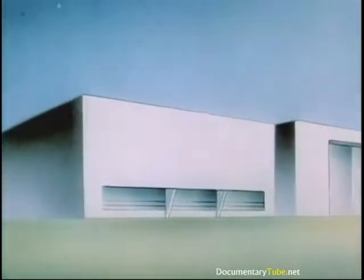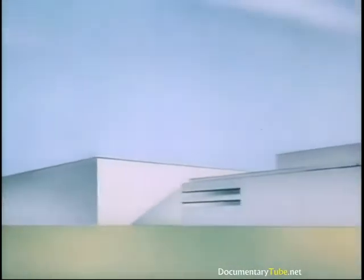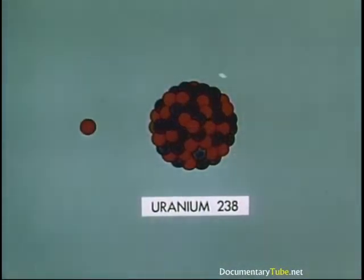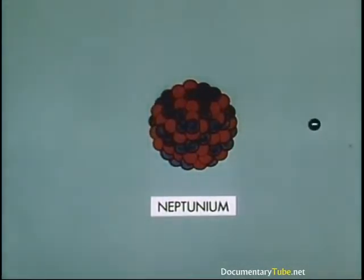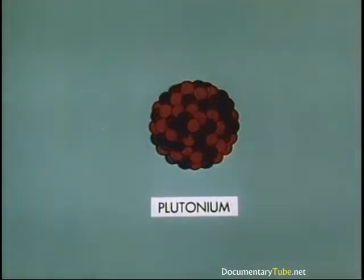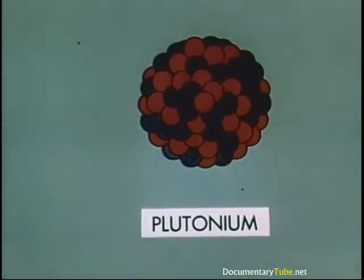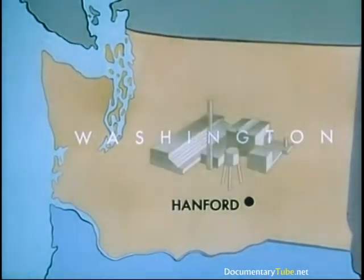The Manhattan Engineer District team of scientists, engineers, industrialists, labor, and military built huge plants to produce the stuff by this and other means. The scientists went further, taking advantage of the fact that uranium-238, instead of fissioning, tends to capture neutrons to ultimately become plutonium — and plutonium is as effective for fissioning as uranium-235. The Manhattan Engineer District team built a plutonium plant at Hanford, Washington.